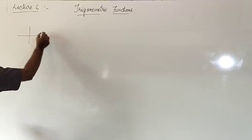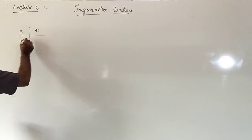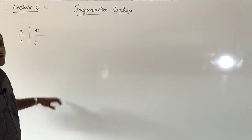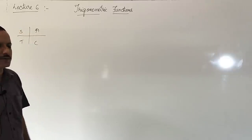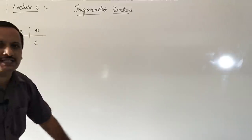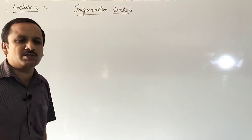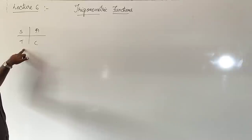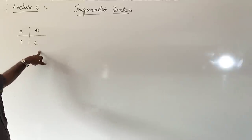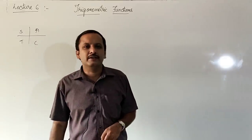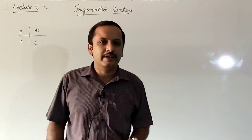You know the rule ASTC. This is the first quadrant, second quadrant, third quadrant and fourth quadrant. In the first quadrant all the six trigonometric functions are positive. In the second quadrant sine is positive, cosecant theta is also positive and the remaining trigonometric functions are negative. In the third quadrant tan is positive and hence cot is also positive, remaining are negative. In the fourth quadrant cos theta and secant theta are positive and the rest of the trigonometric functions are negative.